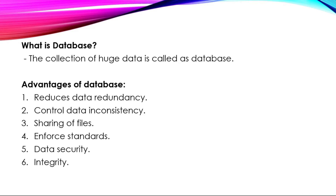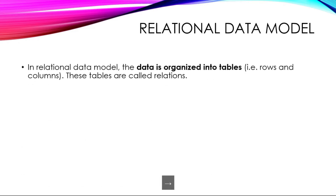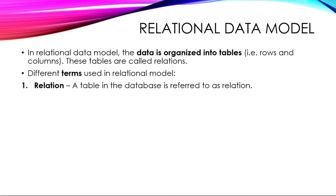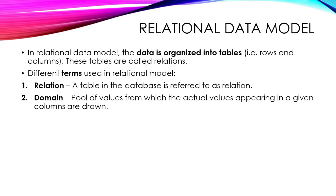Next is the Relational Data Model, that is RDBMS. In the Relational Data Model, data is organized into tables, that is rows and columns. These tables are called Relations. Different terms are used in the Relational Data Model. First is Relation — a table in the database is referred to as a Relation. Next is Domain — a pool of values from which actual values appearing in a given column are drawn.